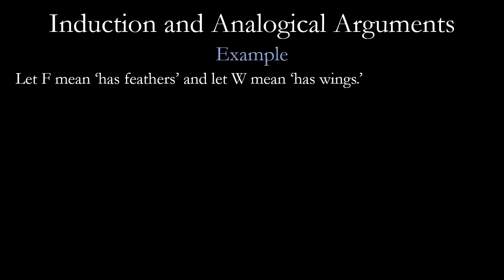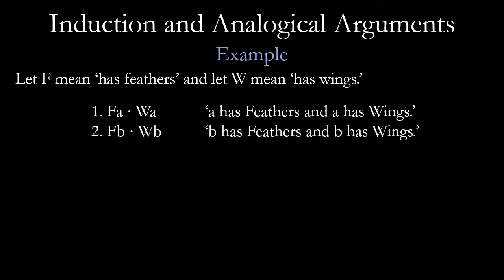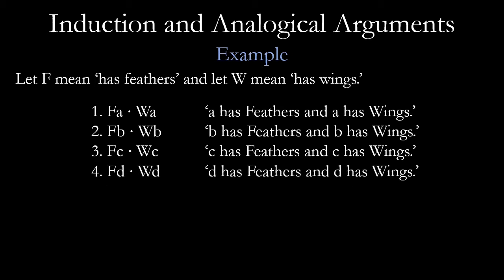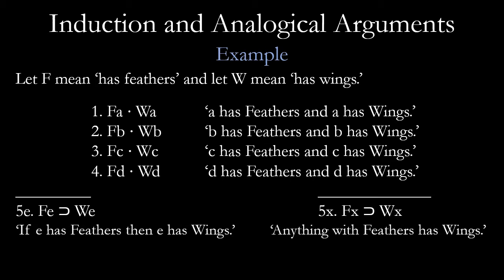As an example, let's say F means the predicate 'has feathers' and W means the predicate 'has wings.' So sample A has feathers and has wings. Sample B has feathers and has wings. Sample C has feathers and has wings. Sample D has feathers and has wings. Well, we may be able to conclude that if sample E has feathers, then sample E will have wings. Or we can say anything with feathers also has wings. These are two different ways we can go with this.